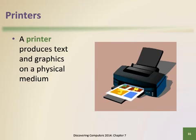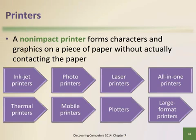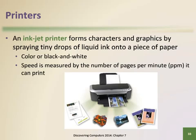A printer is an output device that produces text and graphics on a physical medium; this output is called a hard copy. A non-impact printer forms characters and graphics without actually striking the paper. One advantage of non-impact printers is their quiet operation. An inkjet printer forms characters and graphics by spraying tiny drops of liquid ink onto paper. Inkjet printers are the most popular printers for home use and produce letter-quality print suitable for business communications, though the image can smear if moistened.